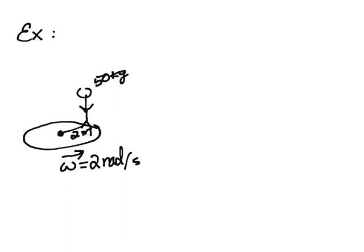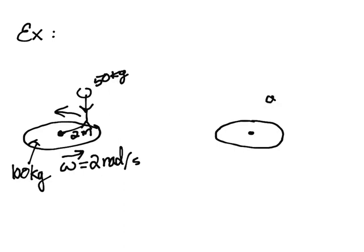Here's the example. We have a kid standing on a playground merry-go-round. The kid has a mass of 50 kilograms and the merry-go-round has a mass of 100 kilograms. The merry-go-round is a perfect disc with a radius of 2 meters, and it's initially rotating with an angular velocity of 2 radians per second. The kid was initially standing at the middle, then walks to 1 meter from the center. What will be their new angular velocity?